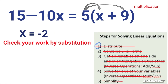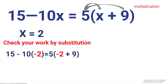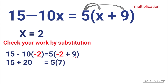x equals negative 2. You always go back and check your work by substituting in the value of the variable that you found — in this case, negative 2. Wherever I see an x, I substitute it with negative 2. Negative 10 times negative 2 is positive 20, and 5 times negative 2 plus 9 is 7, giving us 35 equals 35. That is a true statement, and therefore I know that my response is correct.